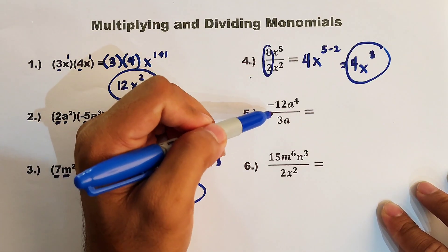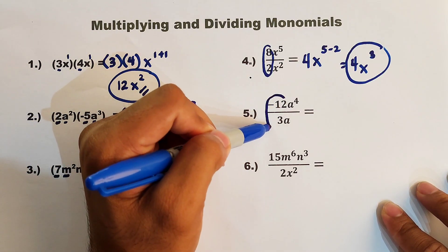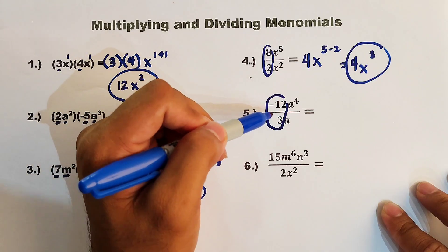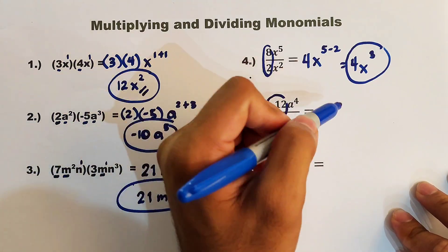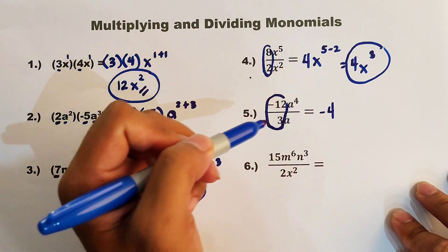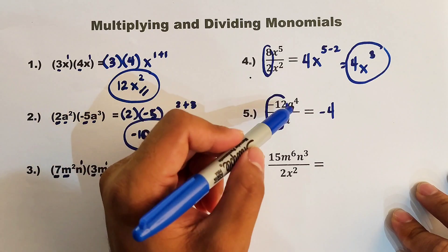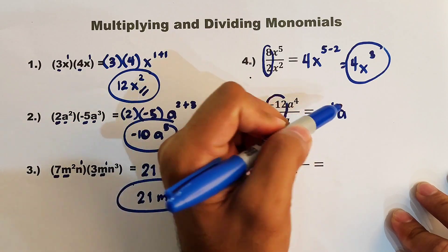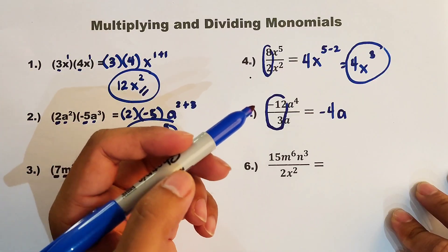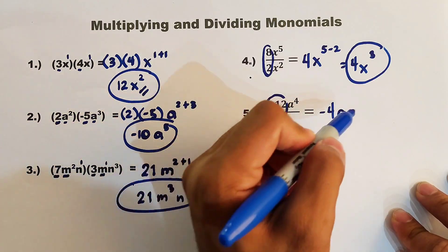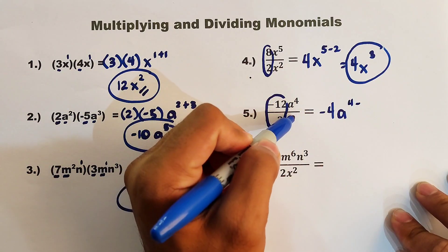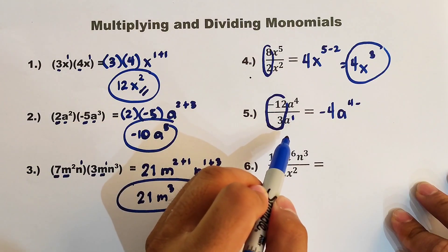Okay, let's continue. Now, we have negative 12 divided by 3. The answer is negative 4. And as for the variables, we have the variable a. And as I have mentioned earlier, we will subtract the exponents. We have 4 minus, here it has an invisible one.